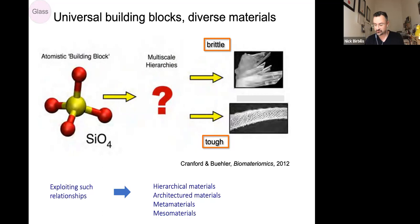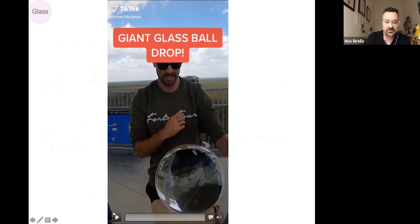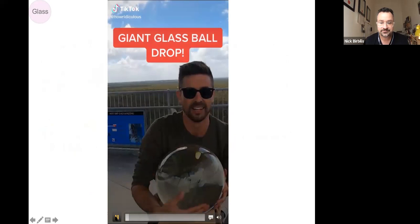So what I thought I'd do is show you a video of a bowling ball sized glass ball dropped from a massive height onto a bit of steel sheet. This is actually from the TikTok page from some Australian goofballs called How Ridiculous.